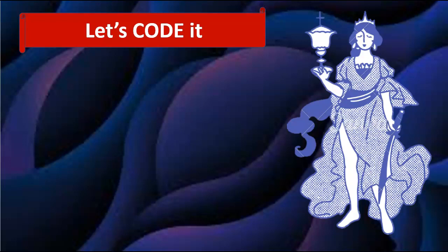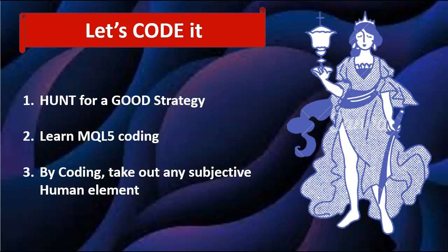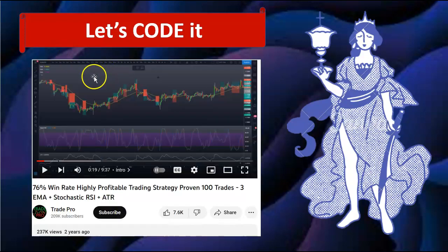Welcome back to the Let's Code It series, where we hunt across YouTube for a good trading strategy and code it into MQL5. By coding it we remove any subjective human element, so when we test it we know the results follow the rules 100%. Today we're looking at the '76% Win Rate Highly Profitable Trading Strategy' by Trade Pro, which has around 140,000 views.